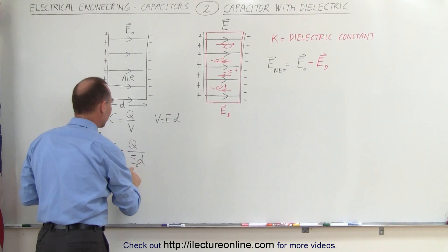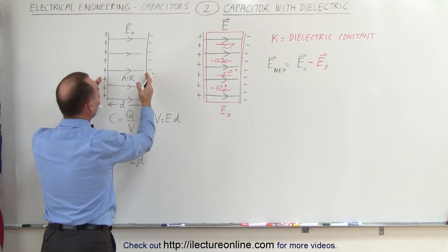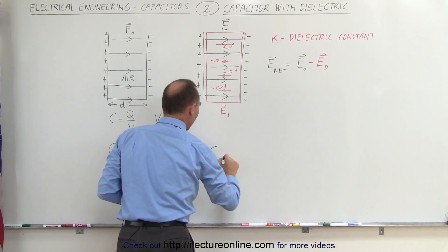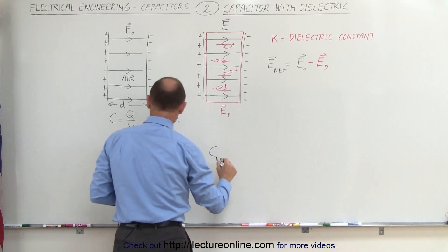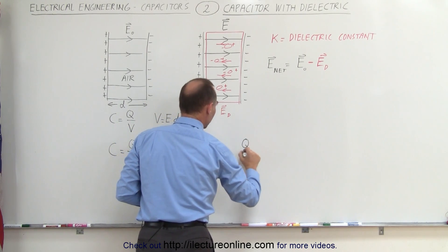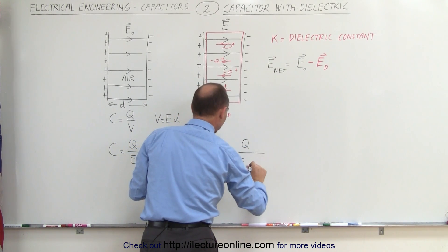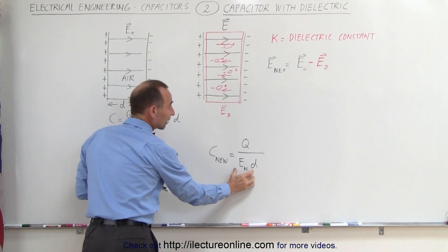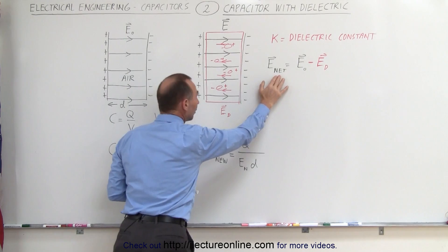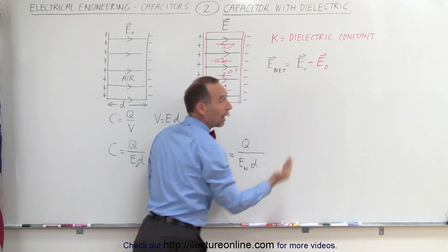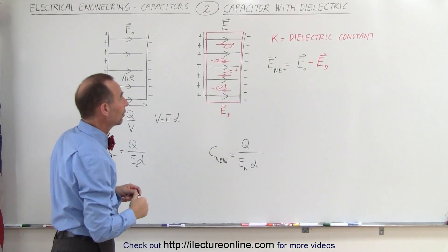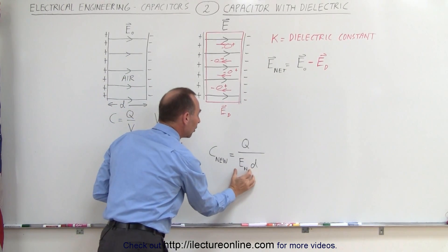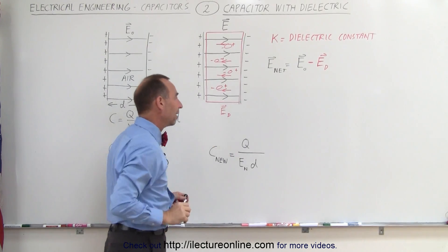If E sub not was the original electric field strength inside the capacitor with air between the plates, then the new capacitance when I place the dielectric in is going to be equal to the charge on the plates divided by the net electric field times the distance between the plates. Notice the net electric field is going to be smaller than the original field, smaller due to the opposing electric field caused by the dielectric, and a smaller electric field causes a larger capacitance.